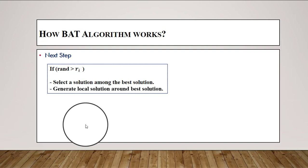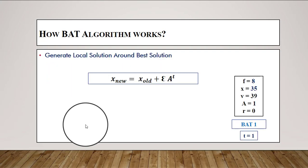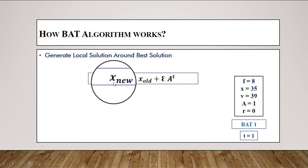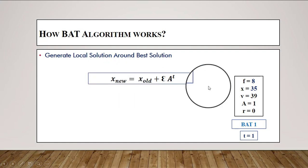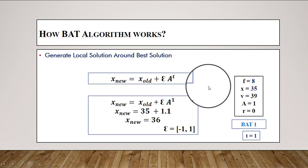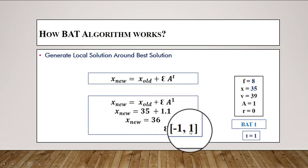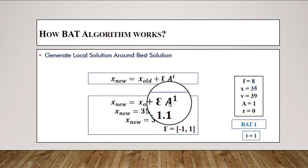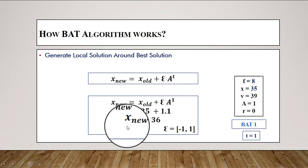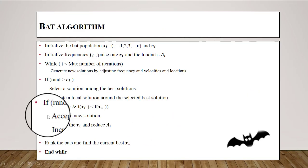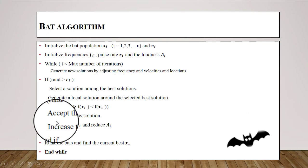Next, we generate a local solution around the best bat's position. The new position is calculated as: x_new = x_old + epsilon * A, where epsilon is a random value in the range [-1, 1] and A is the loudness (1). The position of the first bat was 35, giving a new position of 63 after applying the equation.